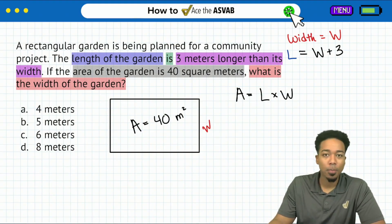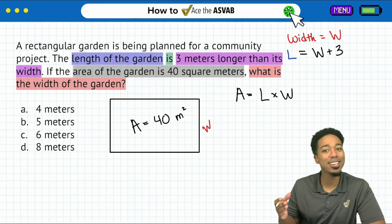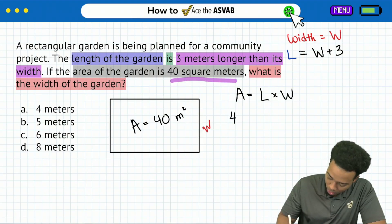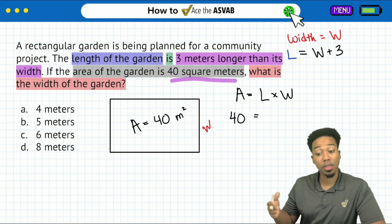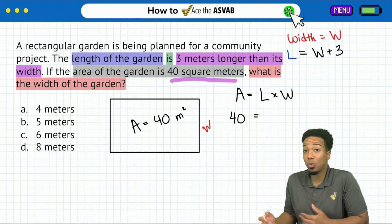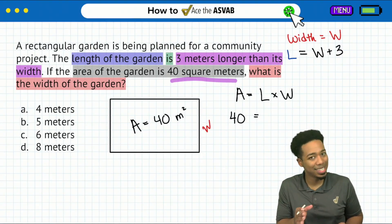Super straightforward, right? Except we're going to go ahead and start replacing things with their values and you'll see how this can get a little complicated. So the area is going to be 40 square meters, just like we saw right there. So we'll replace that right here for the area. For the length, we don't know what the length is and we also don't know what the width is. This is where things get complicated.